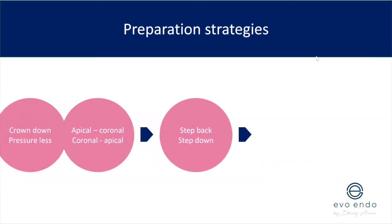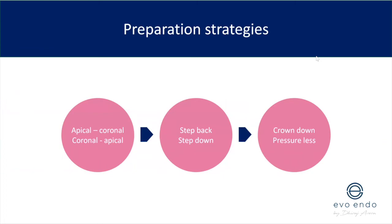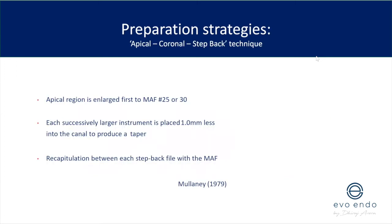Preparation strategies — I'm sure you've all heard terms like apical-coronal, corono-apical, step back, step down, crown down pressureless. The traditional step back technique from the late 1970s involved enlarging the apical region first to a master apical file of size 25 or 30, and then placing successively larger instruments one millimeter shorter than working length — producing your taper. For example, one millimeter short with a size 30, two millimeters short with a 35, three millimeters with a 40.